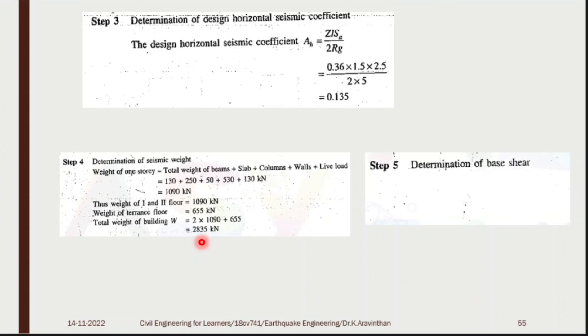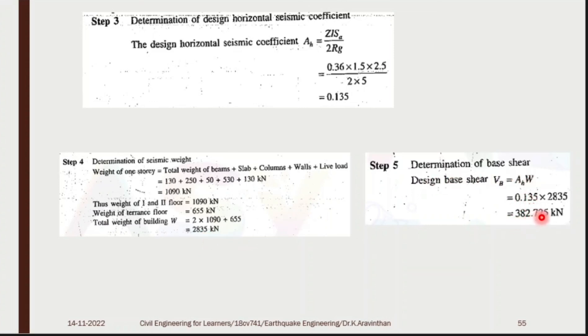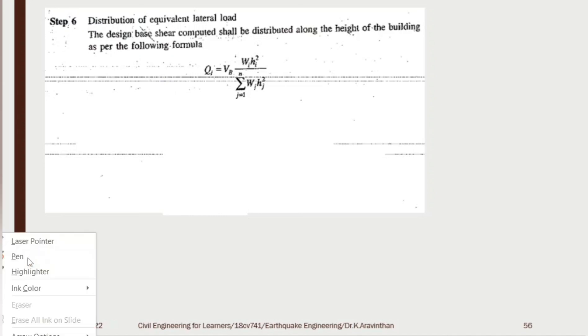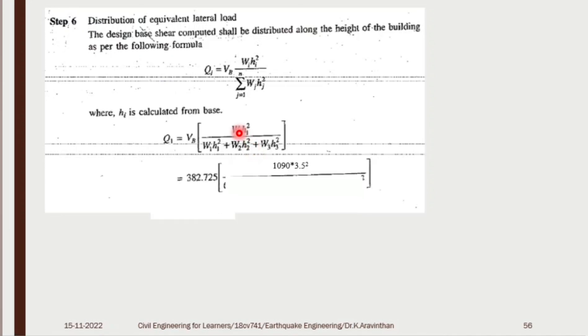Step 5 — Base shear: VB = AH × W = 0.135 × 2835 = 382.725 kN. Distribution of equivalent lateral load: the design base shear is distributed to each floor using the formula involving floor weight and height squared. For floor 1 and floor 2, weight = 1090 kN and height = 3.5 m; for the terrace, weight = 655 kN and height = 10.5 m.